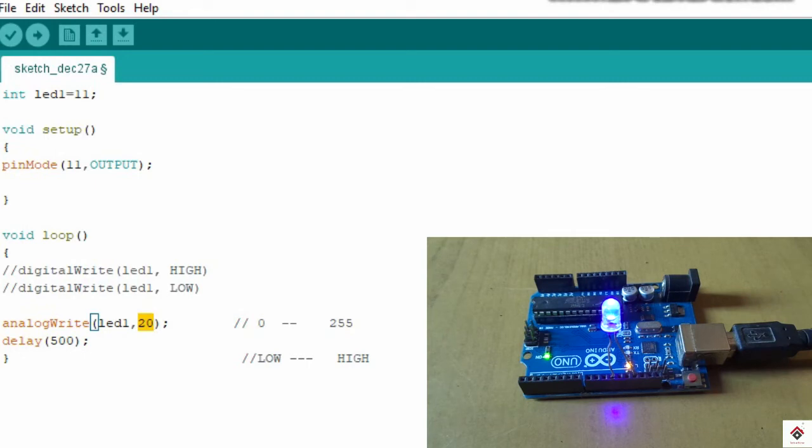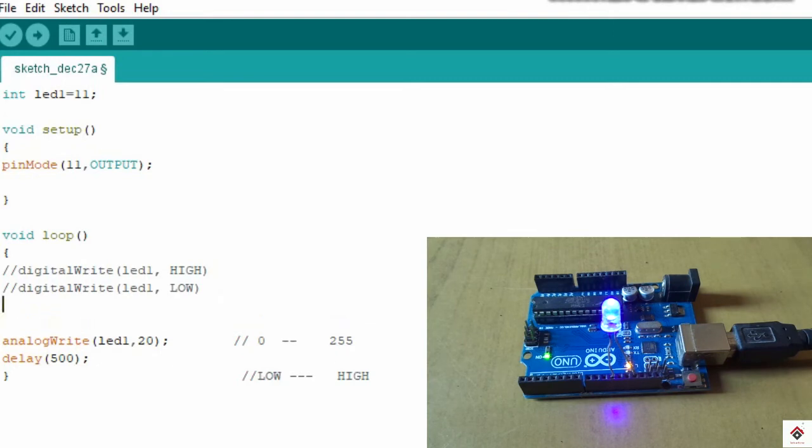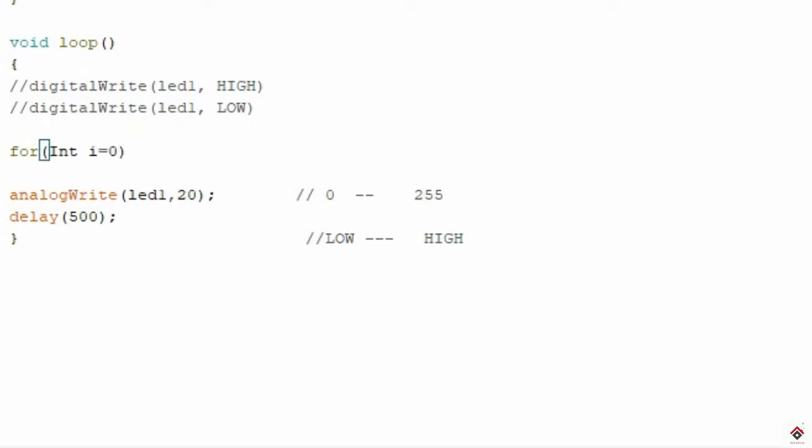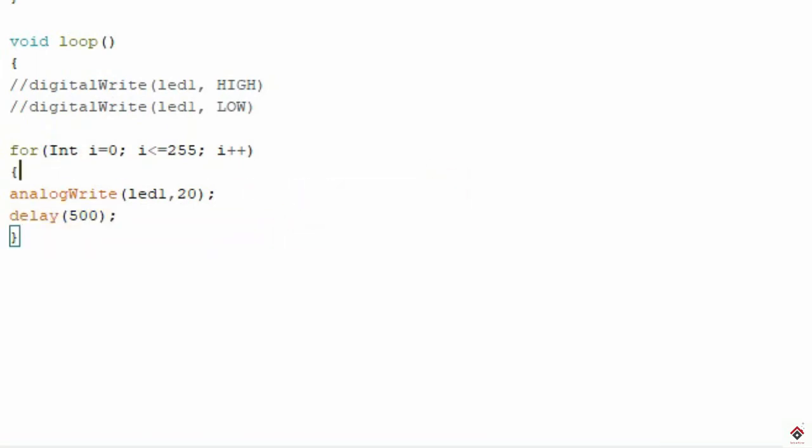Now we'll directly move on to the fading logic where we have to continuously loop the duty cycle values. For that we need for loop. So I'll make one for loop for increasing order and another for decreasing order. So it starts with 0 and the maximum value will be 255. So this for loop takes LED from 0 to its maximum brightness.